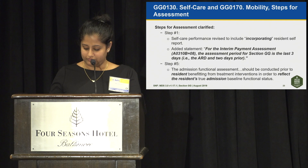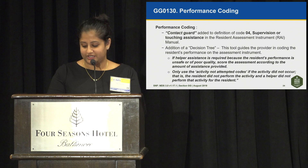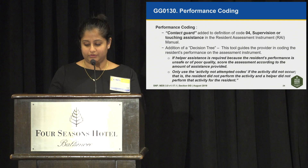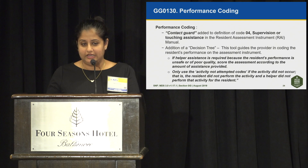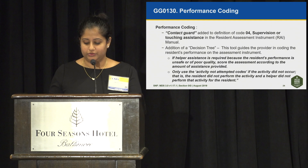For GG0130 performance coding, providers should use resident self-report prior to using activity-not-attempted codes. We also added the definition of contact guard to code 04, supervision or touching assistance. There is a decision tree now available — a tool that guides providers in coding the resident's performance on the assessment instrument. It is also in all of your folders. We want to reiterate that activity-not-attempted codes should only be used if the activity did not occur during the three-day assessment period, and if neither the resident nor a helper performed that activity.